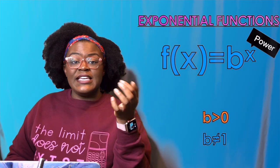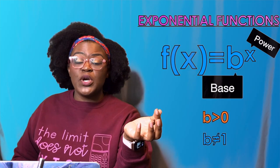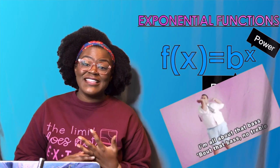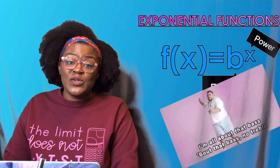So your x is a power and your b is what you call your base because it's all about that base, about that base, no treble. That only works if b is greater than zero and when b cannot be equal to one.